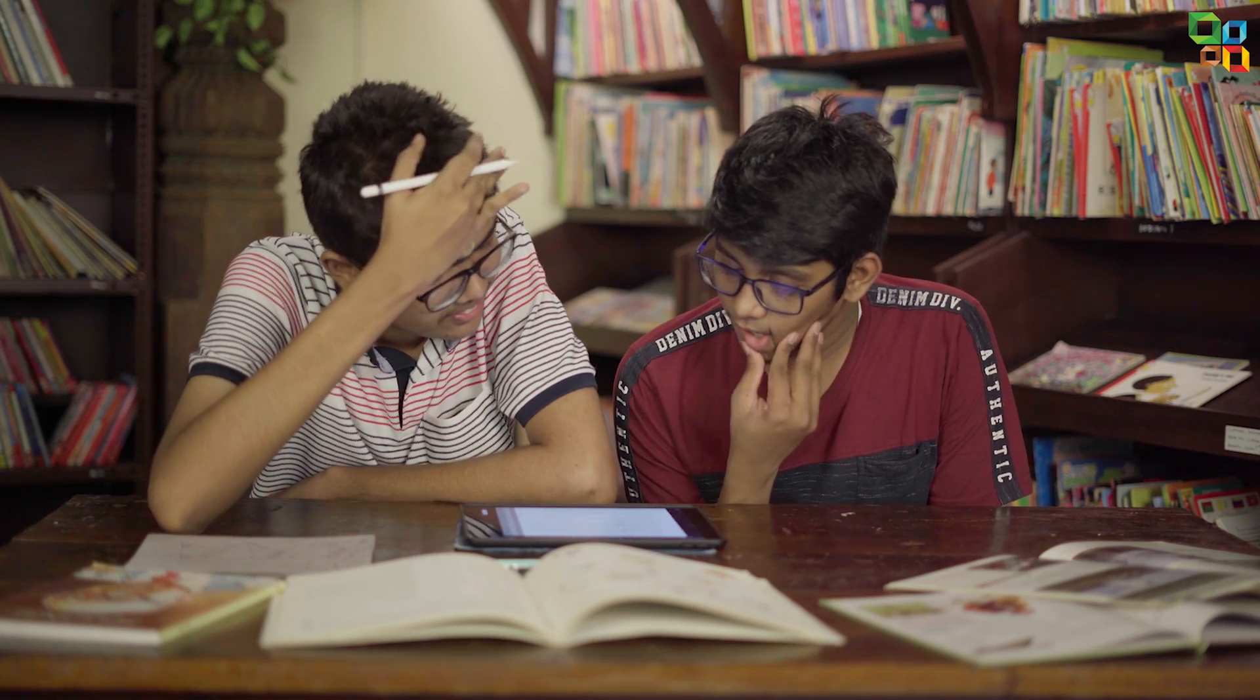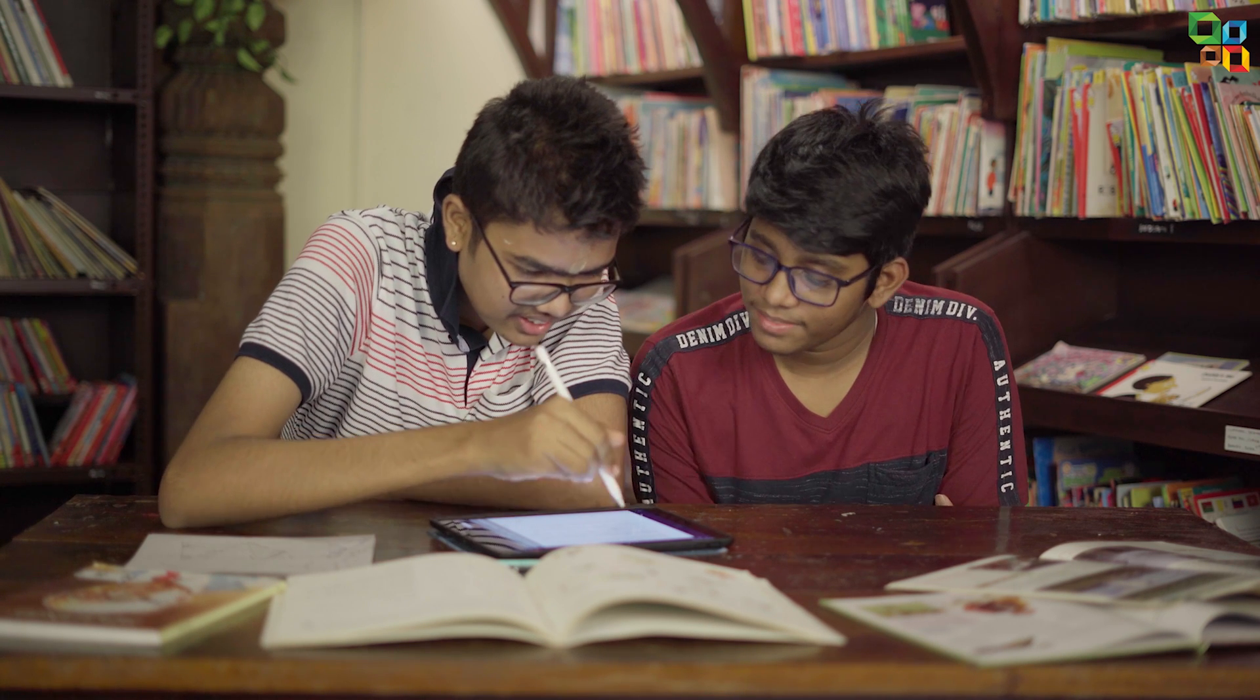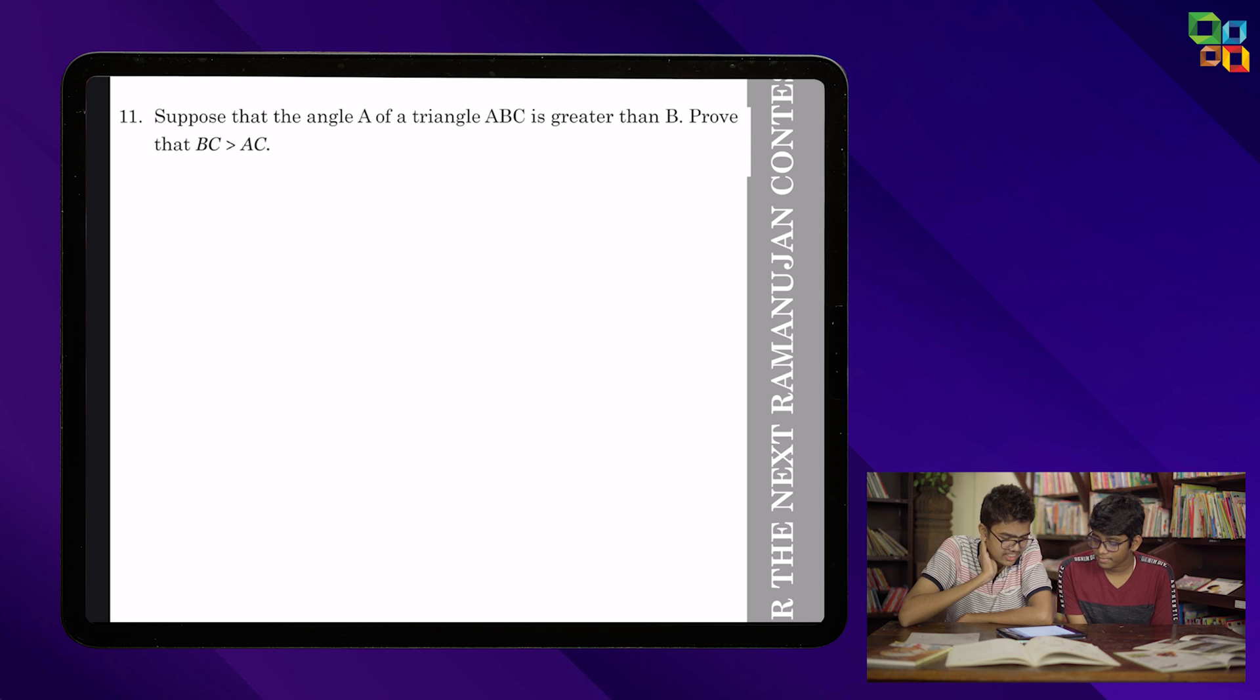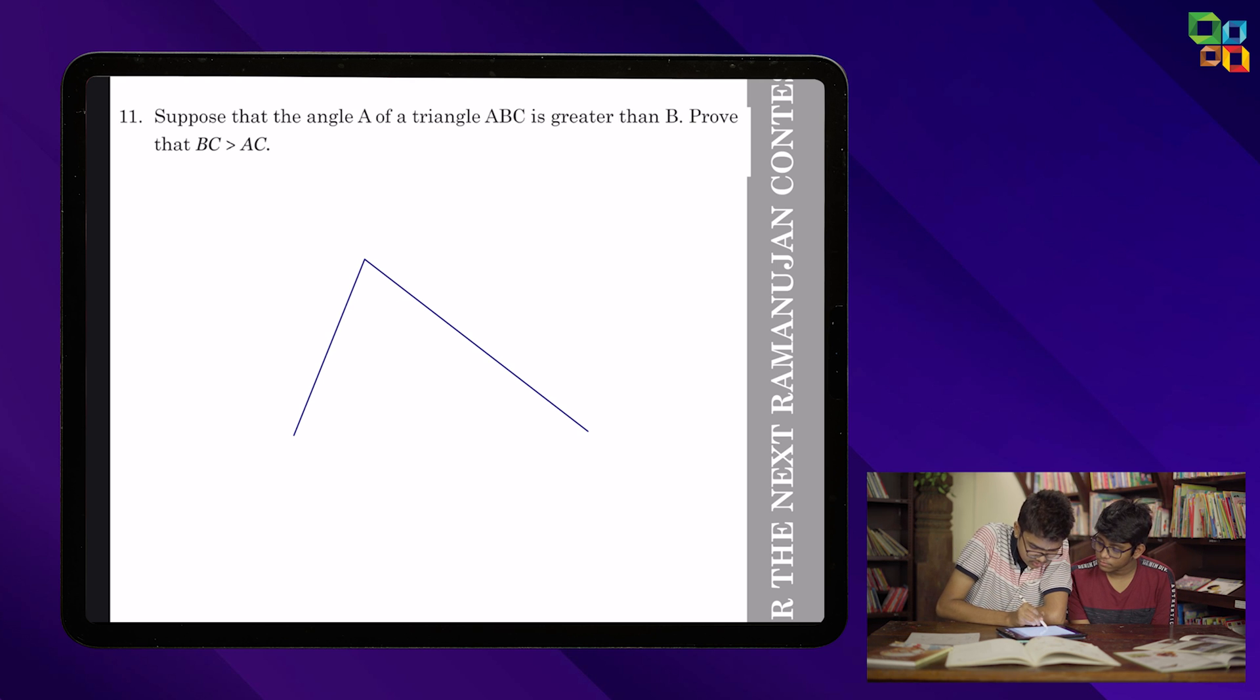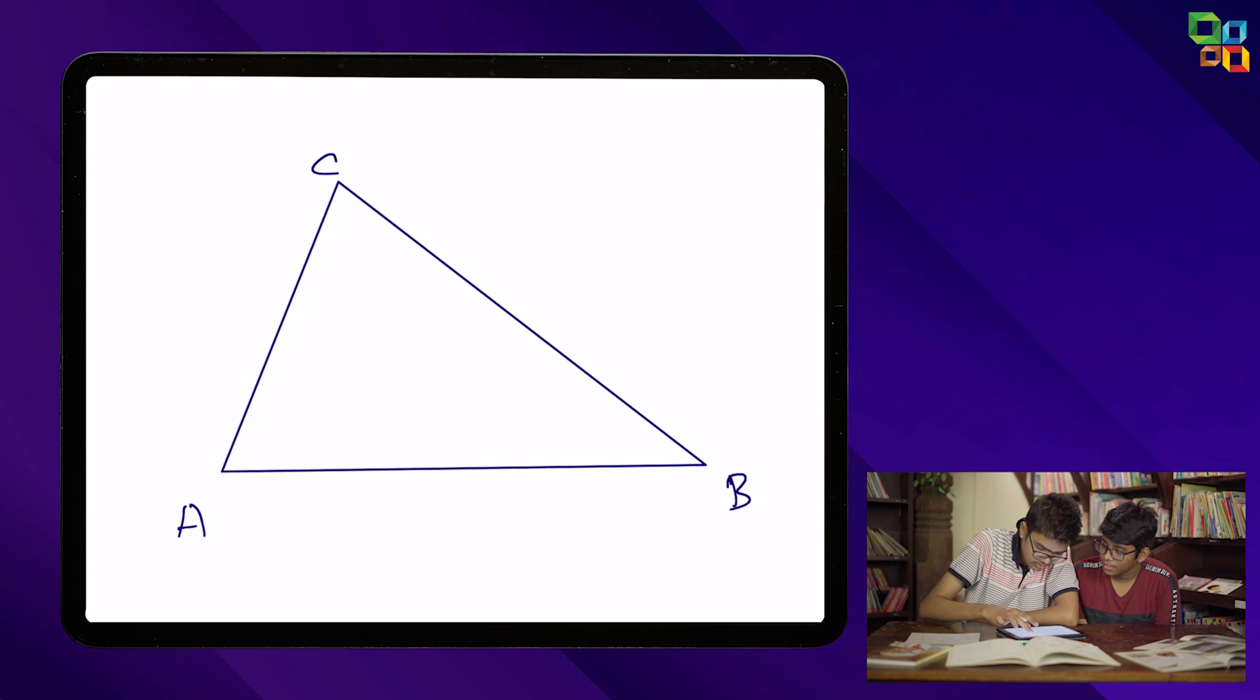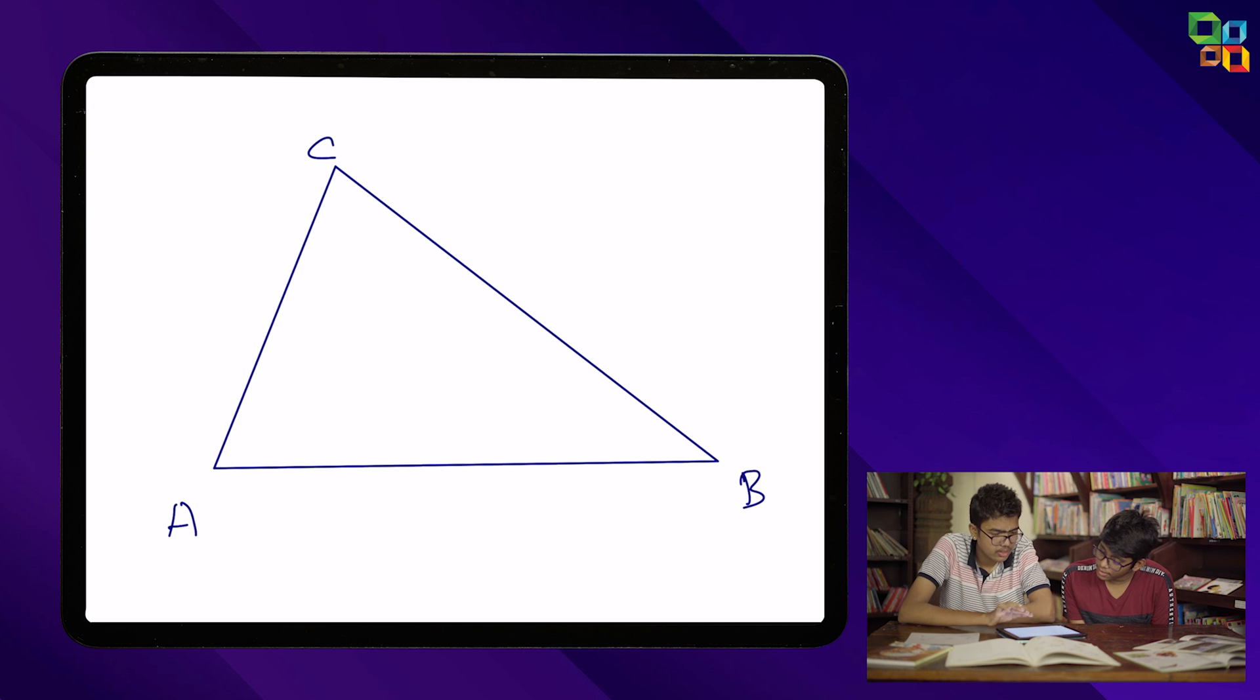So what do you think was the toughest question? I think the 11th one. Yeah, something what we take for granted, they are asking us to prove that. BC is greater than AC. So you need to prove that BC is greater than AC. First, it's given that angle A is greater than angle B. So in this, A is greater than B. Better to make this B because this is like the smaller one. So this is like a diagram. So we need to prove that BC is greater than AC. Correct.